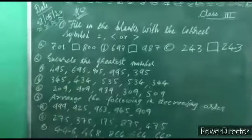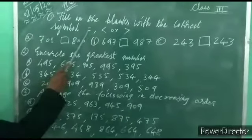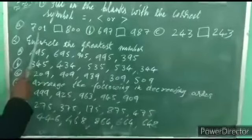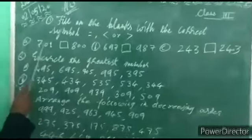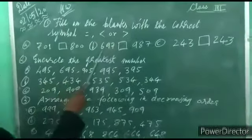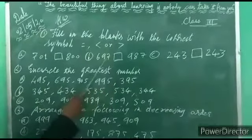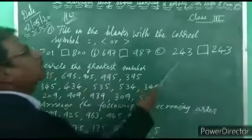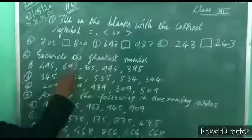Now, fill in the blanks with the correct symbol — is equal to, less than, or greater than. 701 on the left side and 800 on the right hand side: 701 is less than 800, so put the less than sign. 697 and 987: 697 is less than 987, so put the less than sign. 243 and 243: both numbers are the same, so put the equal to sign.